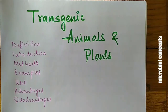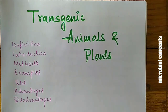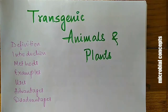Welcome to Microbial Concepts. Today we are going to learn about transgenic animals and plants. This topic is related to the genetic modification of plants and animals, and developing a modified version of that plant or animal is a transgenic version. We will cover definitions, introduction, methods, examples, uses, and advantages and disadvantages of transgenic animals and plants.